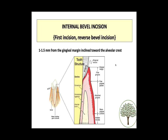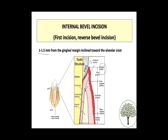The first horizontal incision is the internal bevel incision, given 1–1.5 mm from the gingival margin, inclined towards the alveolar crest. We call it internal bevel because the bevel is placed inside — when you see it from outside, you see continuous gingiva. You can't see the bevel. We give a 45-degree bevel but it's not visible from outside, hence the name internal bevel.